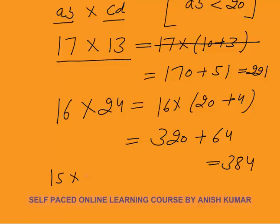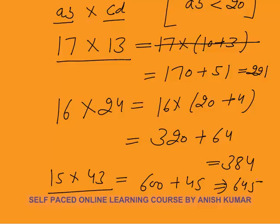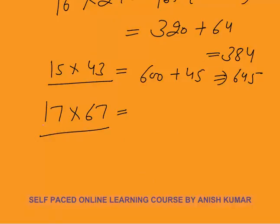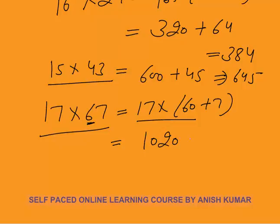Next is 15×43. You must know the table of 15. Calculate 15×40 = 600, plus 15×3 = 45. Answer is 645. Next, 17×67. If you don't know the table of 17, this will be very difficult. 17×6 = 102, so 17×60 = 1020. Then 17×60 + 17×7 = 1020 + 119 = 1139.